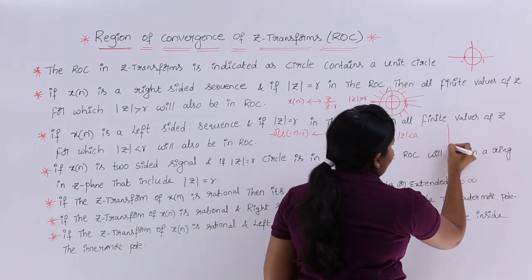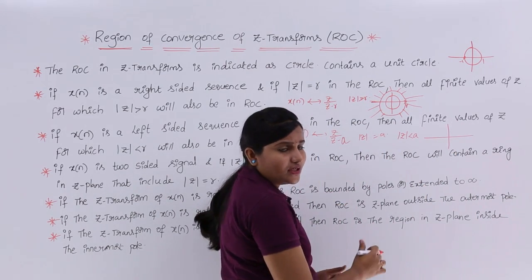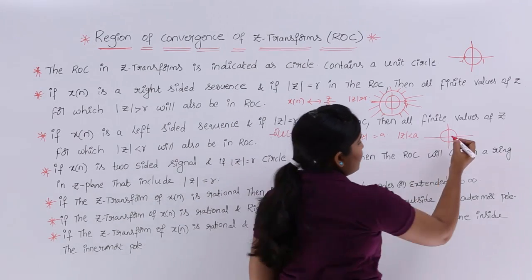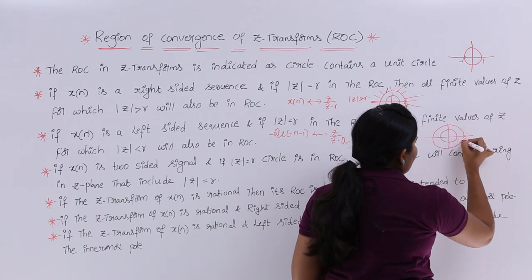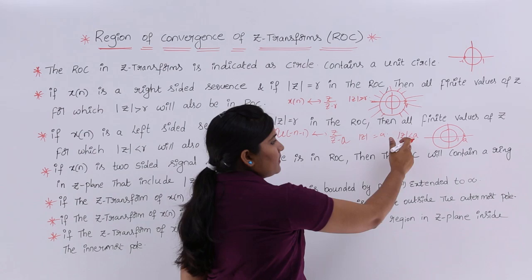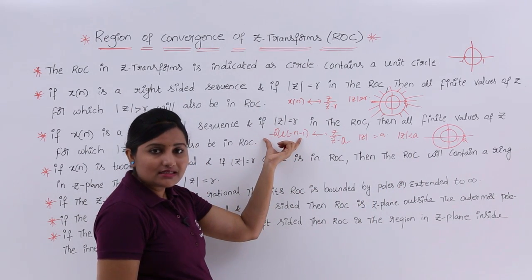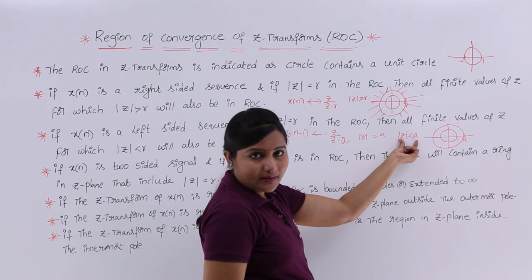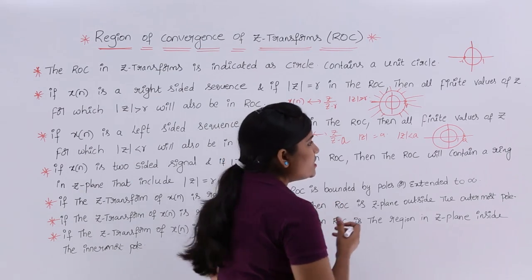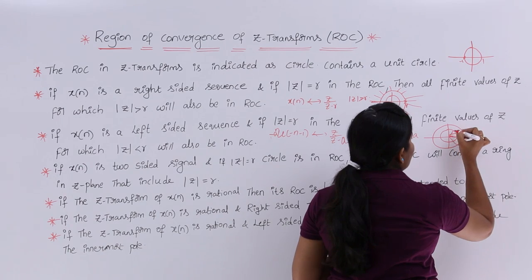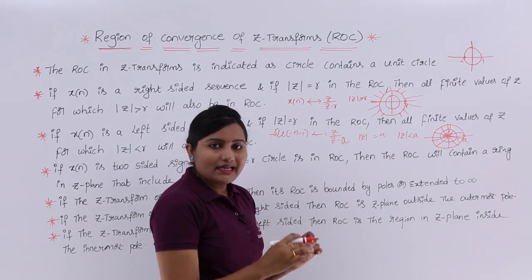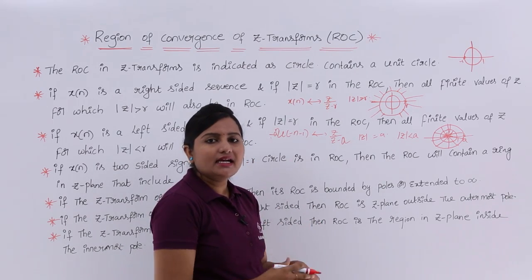To draw this ROC, consider the unit circle with radius 1 and mark the pole at A, drawing a circle of radius A. Since the signal is left-sided, the ROC is mod Z less than A — meaning the region going toward the origin, inside the circle of radius A. Whatever area is less than A in that circle is covered in the ROC. It will include the unit circle and touch it.